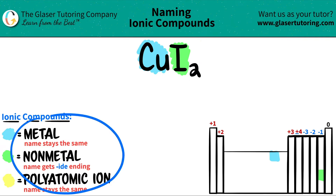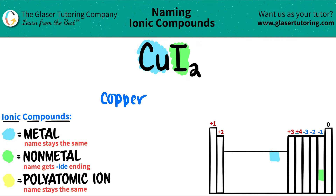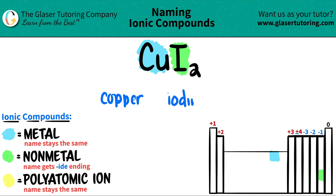Now we just have to name them. The metal name always stays the same, so if this was copper on the periodic table, it's going to be copper now. The non-metal — in this case iodine — always gets the "-ide" ending. So it was iodine, but now it turns into iodide. The "-ne" drops and you add "-de".